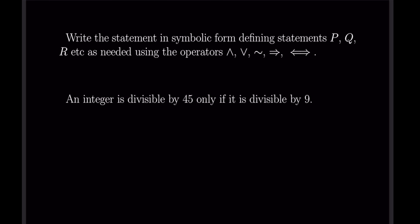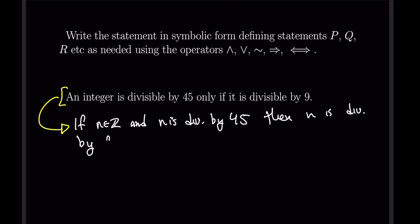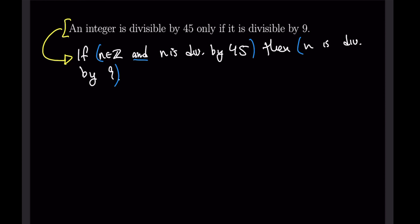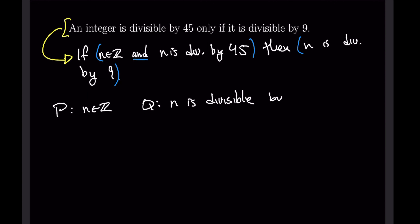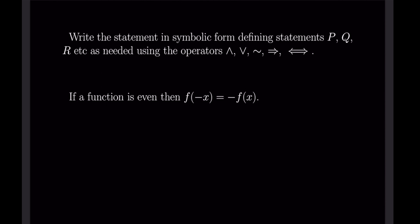Next is another divisibility example. Rewriting in if-then format: 'If n is an integer and n is divisible by 45, then n is divisible by 9.' Let p be 'n is an integer,' q be 'n is divisible by 45,' and r be 'n is divisible by 9.' Just like the last example, the symbolic form is (p ∧ q) → r.